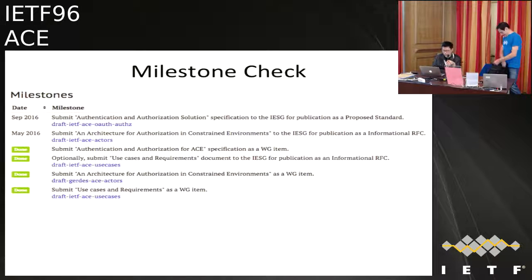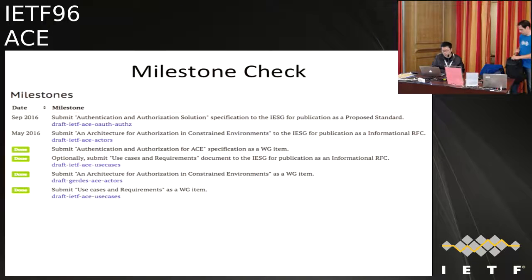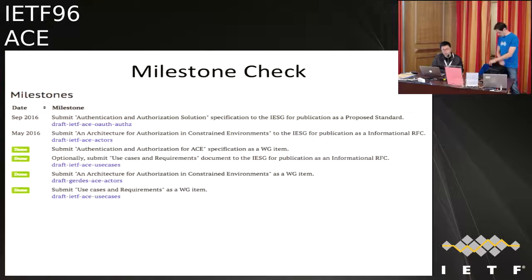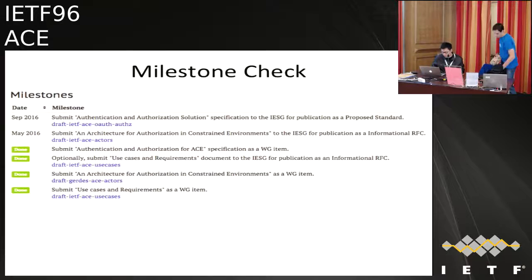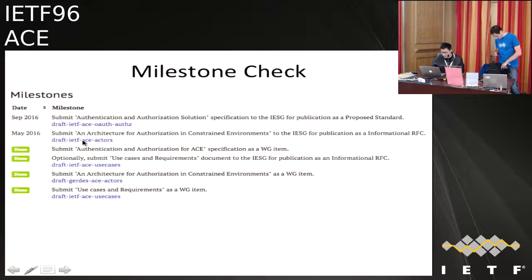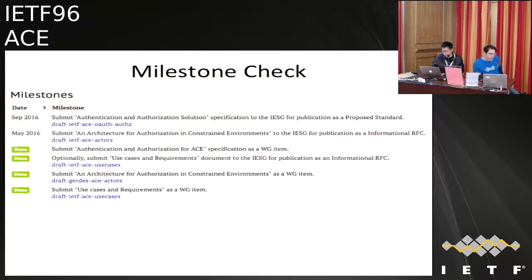About a milestone check: we are done with the use case document — it's published as an RFC. The actors draft architecture document is currently a work item and we will discuss that later. For the authentication and authorization solution, we have a working group draft based on OAuth 2.0, which we will also discuss. We have two milestones: submit the architecture document for publication — a little bit late — and submit the solution specification to IESG for publication, planned for September. It's a little challenging but we will try our best.